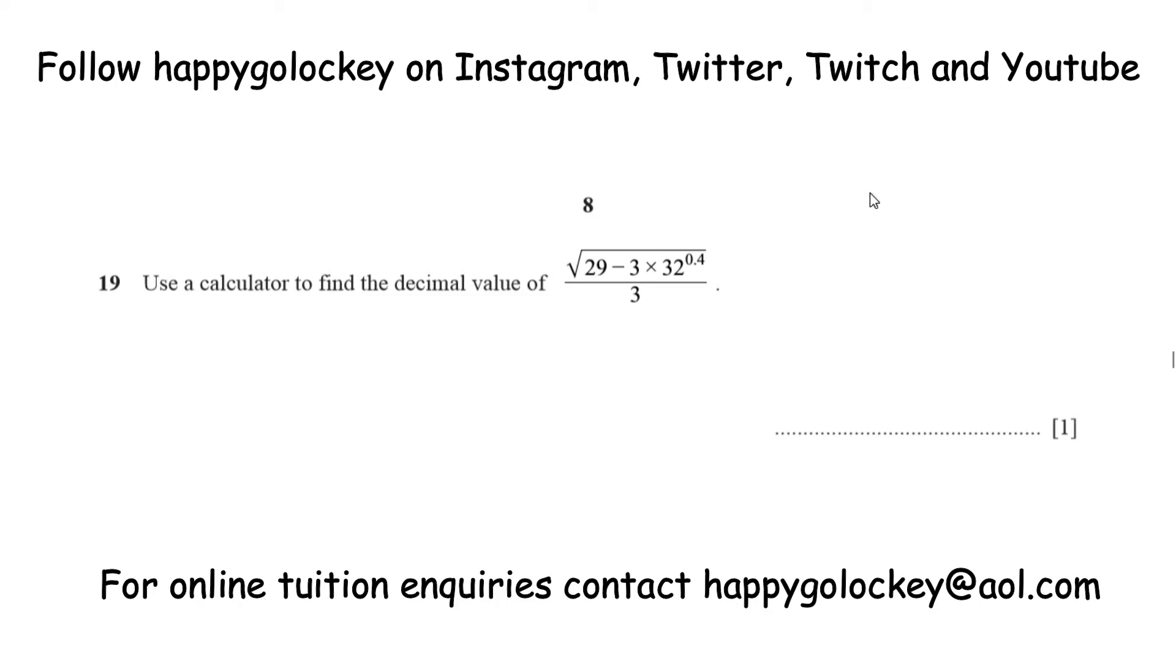So here we go. Use a calculator to find the decimal value of the square root of 29 take away 3 multiplied by 32 to the power of 0.4, all over 3.